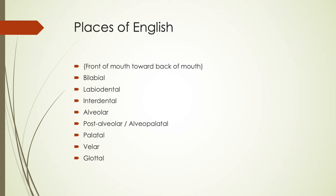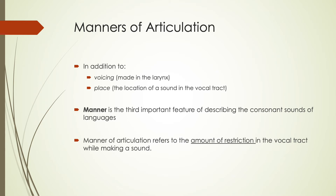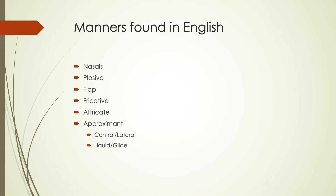The third aspect of describing consonants is manner of articulation — in addition to voicing and place, manner describes how much restriction we have in the vocal tract. Nasals are sounds like M and N where you close your mouth completely and air escapes through the nasal cavity instead. M is a bilabial nasal — you close your lips and let air flow through your nose. N is an alveolar nasal — your tongue goes up against the alveolar ridge and air escapes through the nose.